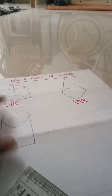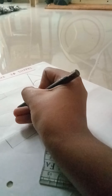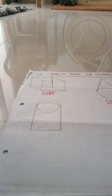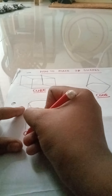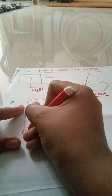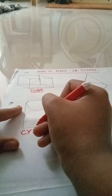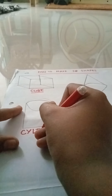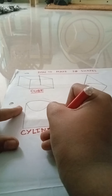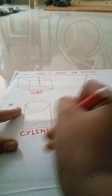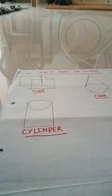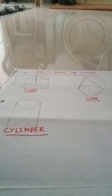We have to not do it like a big circle - we have to do it like an oval. Let us write it: cylinder - C, Y, L, I, N, D, E, R - cylinder. Okay guys, this is also ready. Can anyone guess what is our next shape?